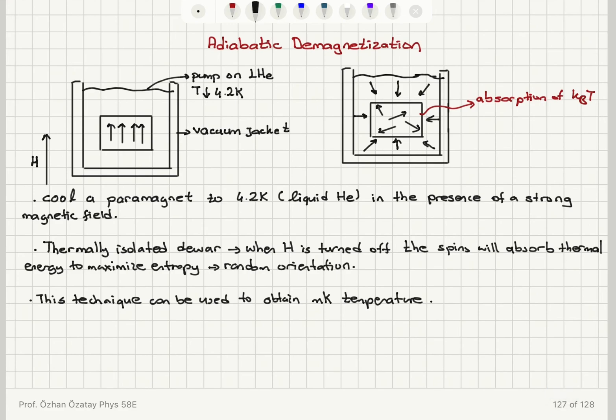So adiabatic demagnetization is an important technique to obtain millikelvin temperatures. We use a paramagnet whose spins are randomly oriented at zero field. But when we apply a strong magnetic field, they're ordered. And it's inserted into liquid helium on which we pump so that we decrease the temperature even further. And when the field is turned off, the spins absorb thermal energy and orient randomly which will decrease the temperature even further.